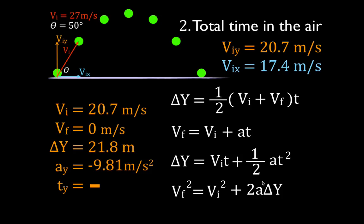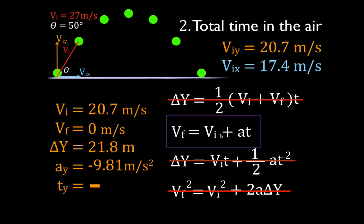The equation without time can't be used. All of the other equations have time, so you could use any of them — sometimes it's fun to use all three and check that you get the same answer. I like to use the equation: final velocity equals initial velocity plus acceleration times time. I think it's the simplest. It has the time, and I know the acceleration and the velocities.